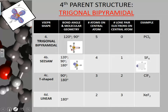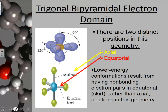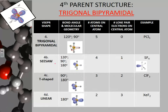Trigonal bipyramidal has three daughter structures: seesaw, T-shaped, and linear. I will show you these in class in more detail, and we will draw these as well. Please copy down the bond angles — you may want to pause the video. Each of these is an example: here's your seesaw, here's your T-shape, and here's your linear. So we go back to linear as a daughter structure. I will talk about how to know where the lone pairs go in class. Once you get this copied, move on to the next structure.